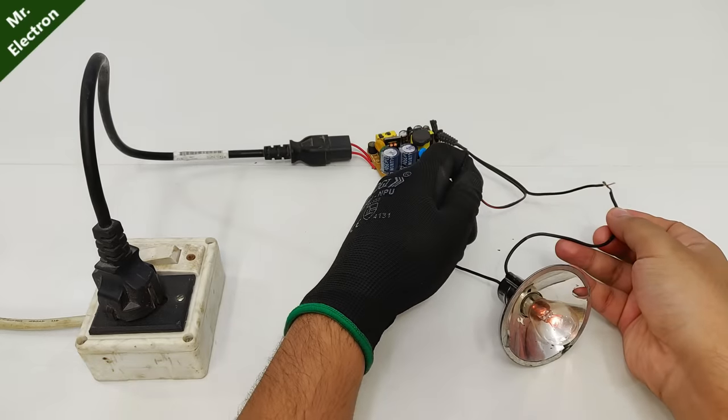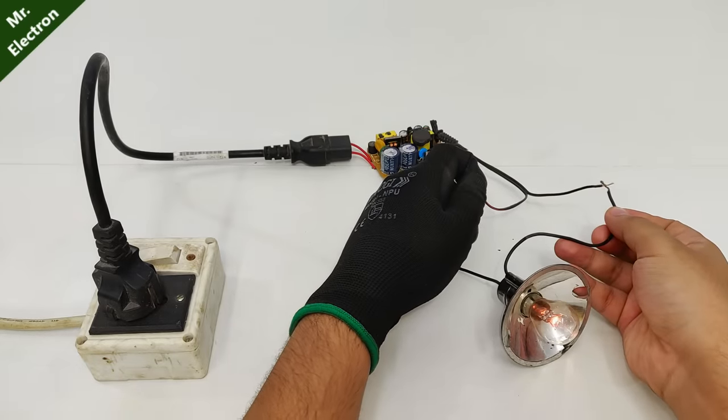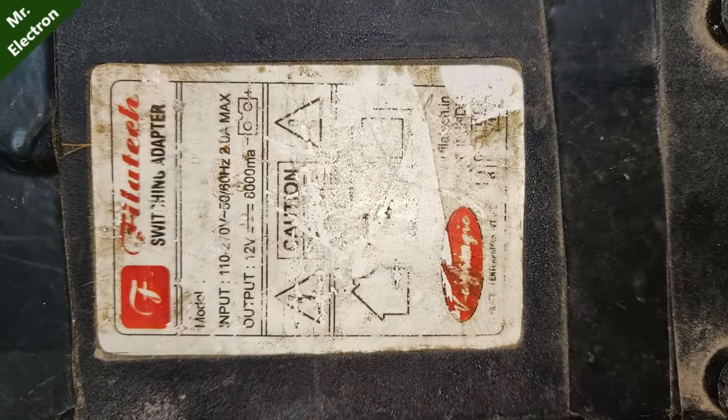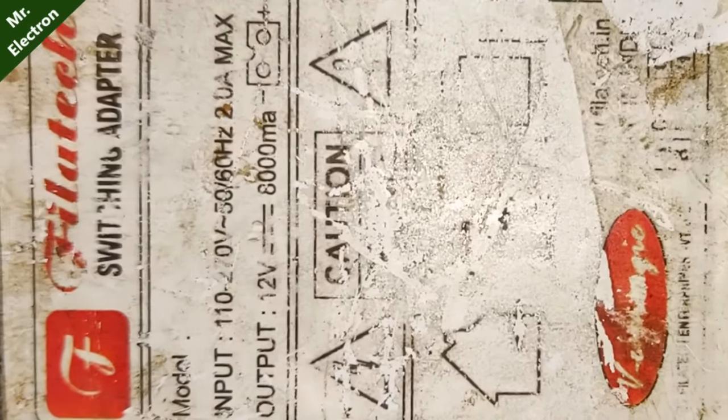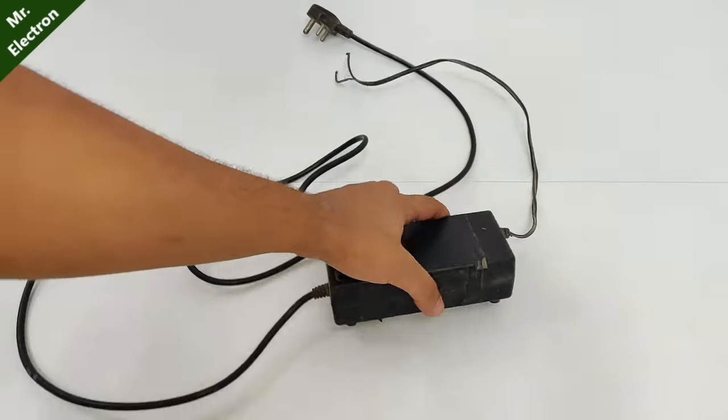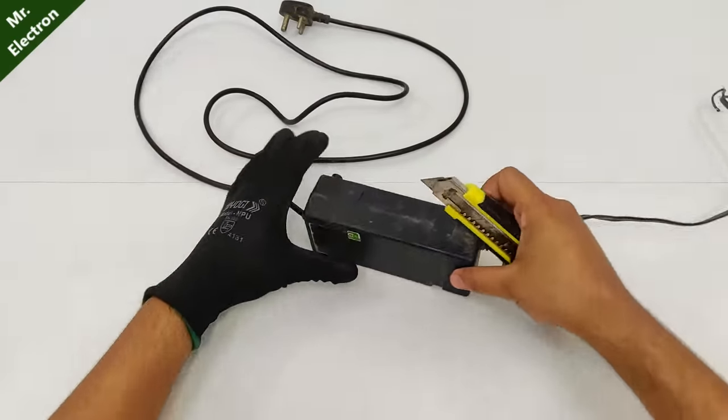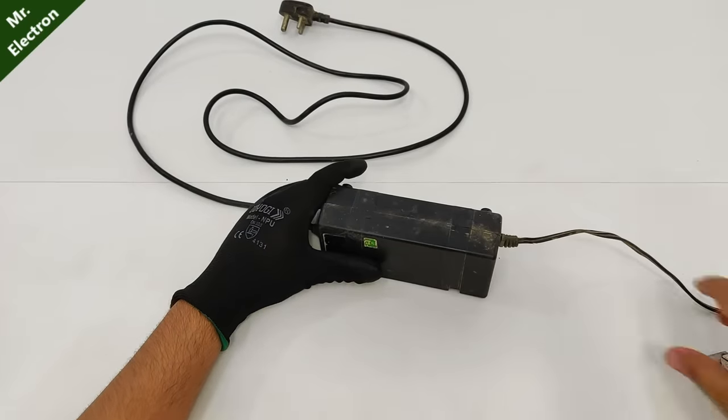So all of them are working and now I can connect them all together. Now this what you see is an old dead 12 volts 8 amperes power supply SMPS, and because it's dead let's open it up, remove the circuit and reuse its case.